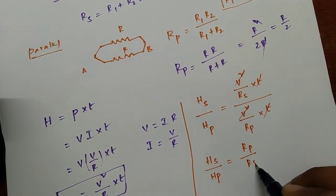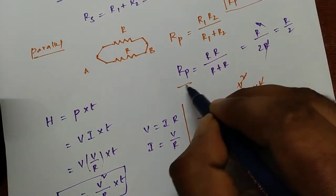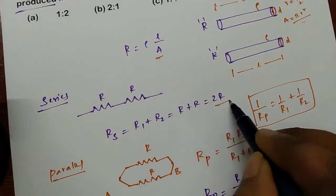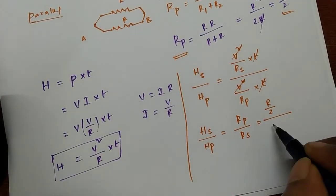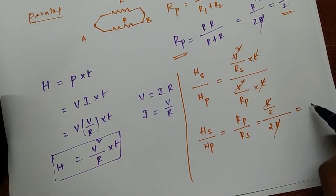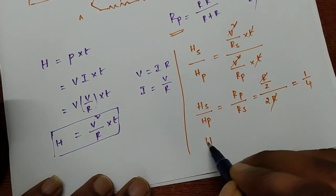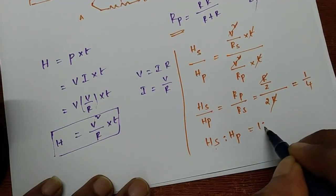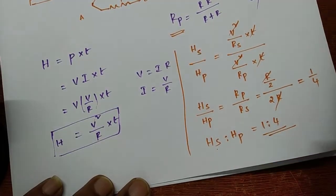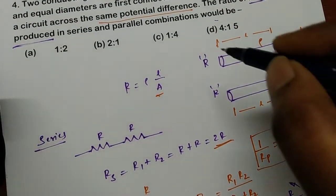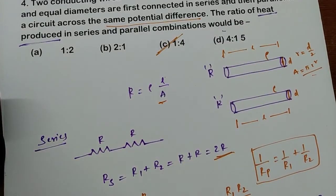R parallel divided by R series: R parallel is R by 2, and R series is 2R. So the ratio is (R/2) divided by 2R. The R cancels, giving 1 by 4. Therefore heat energy produced in series to heat energy produced in parallel equals 1 is to 4. So the answer is 1 is to 4, option C. Thank you.